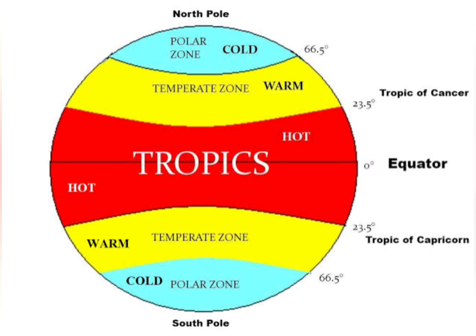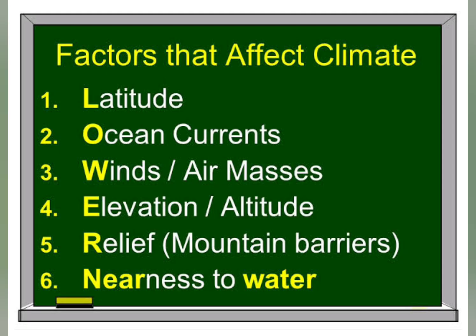Now let's move further to the factors that affect climate: latitude, ocean currents, wind or air masses, altitude, mountain barriers, and nearness to water. In the next session we will learn further about these factors in detail.